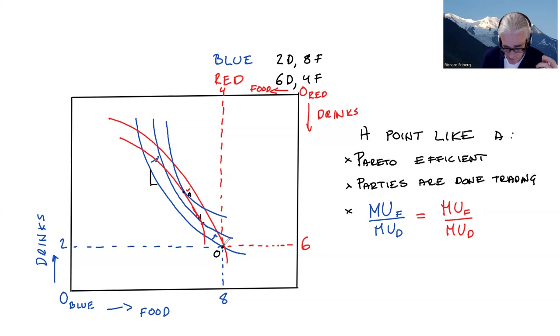So, you know, at a point like O here, Blue had relatively much food, had relatively low marginal utility of food relative to drinks, sitting there very full but kind of thirsty. Vice versa for Red, which had a relatively high marginal utility of food relative to the marginal utility of drinks, so she was hungry. And there was scope for a mutually beneficial trade here.